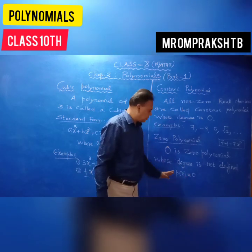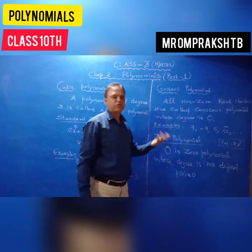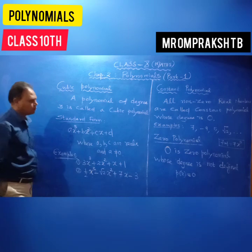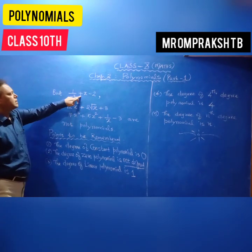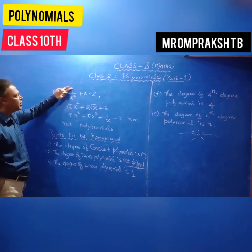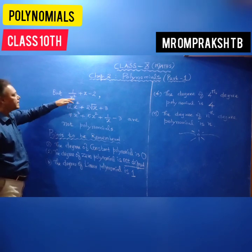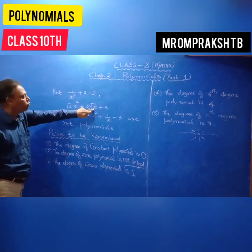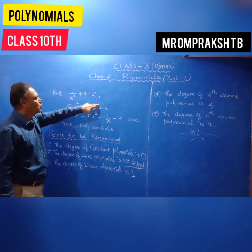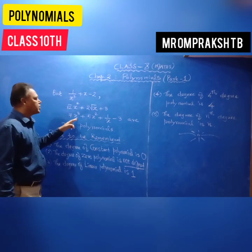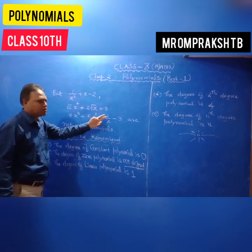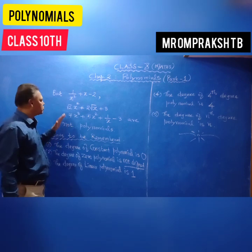We denote polynomials as P(x), G(x), R(x), and so on. Note that 1/x squared plus x minus 2 is not a polynomial because 1/x squared equals x power minus 2, which has a negative exponent. Similarly, root x can be written as x power 1/2 — a fraction — so that is also not a polynomial. Expressions with 1/x can be written as x power minus 1, which is negative, so these are all non-polynomials.